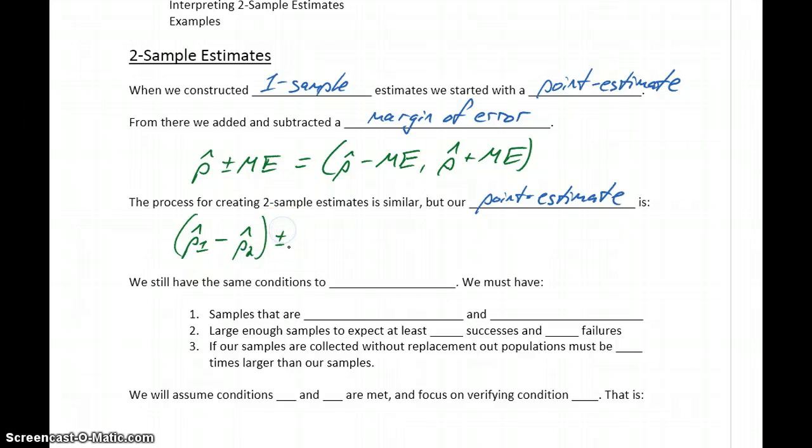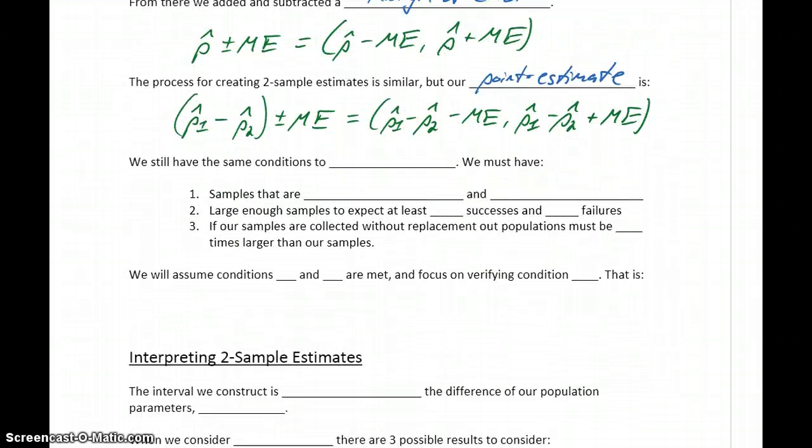So we'll take that point estimate, add and subtract a margin of error, which will give us the upper and lower bounds for our confidence interval. Just like with one sample estimates, our point estimate, in this case the difference of our two sample proportions, will be the exact center of that interval, and it will be stretched in each direction by that same amount, that same margin of error.